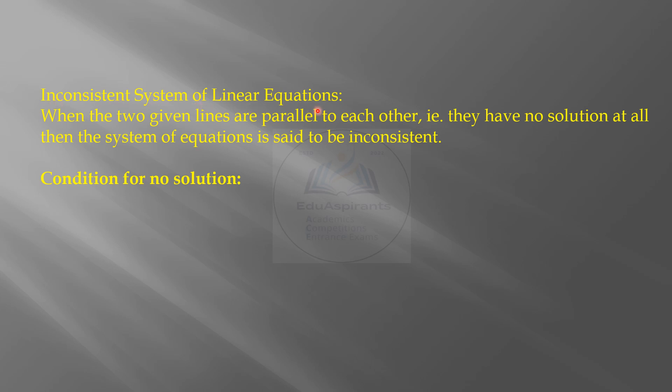Inconsistent system of linear equations: When the two given lines are parallel to each other, i.e. they have no solution at all, then the system of equations is said to be inconsistent. Condition for no solution: a1 upon a2 is equal to b1 upon b2 is not equal to c1 upon c2.